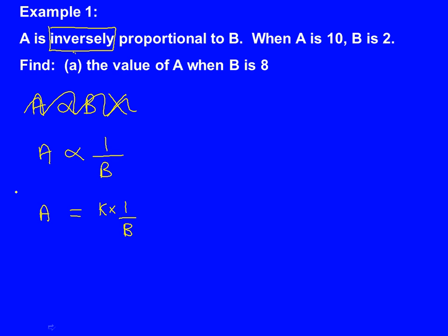Our job now is to work out what K is, and we use the information in the question. So the question says A is 10 when B is 2. So we're going to put these numbers into our formula. So A is 10, equals K times 1 over B, which will now be 1 over 2, because B is 2.